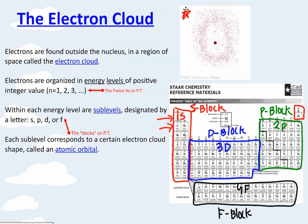And then each sublevel corresponds to a certain electron cloud shape called an atomic orbital. I'll show you more of what that looks like later.